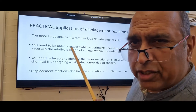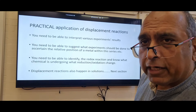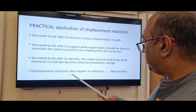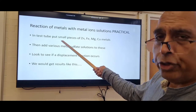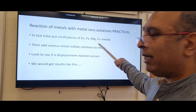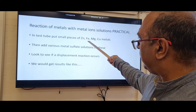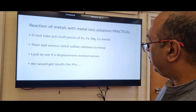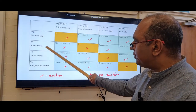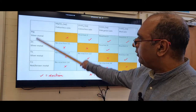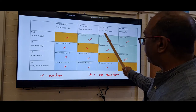Displacement reactions also happen in solutions. In test tubes with pieces of zinc, iron, magnesium, and copper — the order of reactivity is magnesium (most reactive), then zinc, iron, copper (least reactive) — placed in metal sulfate solutions: magnesium sulfate (colorless), zinc sulfate (colorless), iron sulfate (very pale green), copper sulfate (blue).